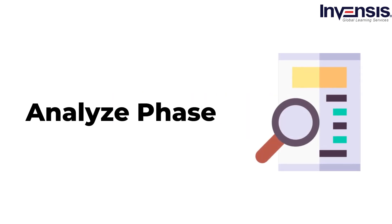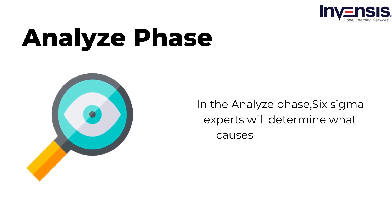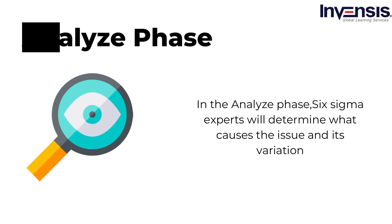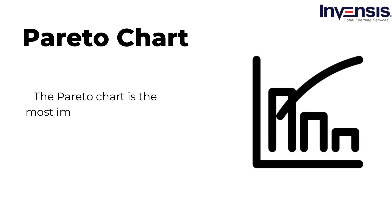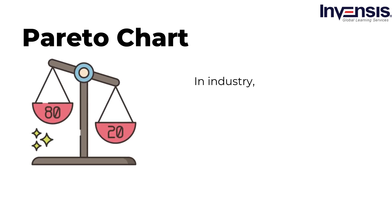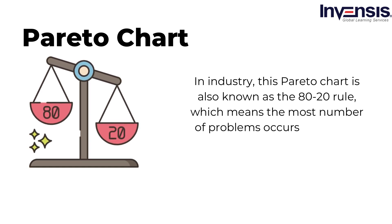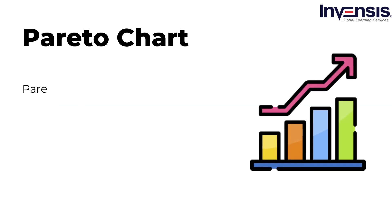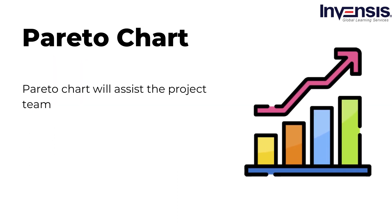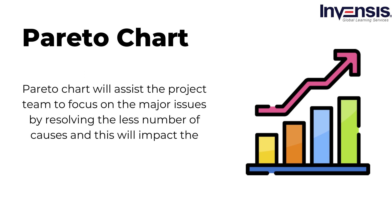We will now start with the analyze phase. In the analyze phase, Six Sigma experts will determine what causes the issue and its variation. It is important to analyze the process capability. The Pareto chart is the most important tool used to analyze the issue. In industry, the Pareto chart is also known as the 80-20 rule, which means the most number of problems occur due to fewer causes. This chart will assist the project team in focusing on the major issues by resolving fewer causes, which will impact the project.